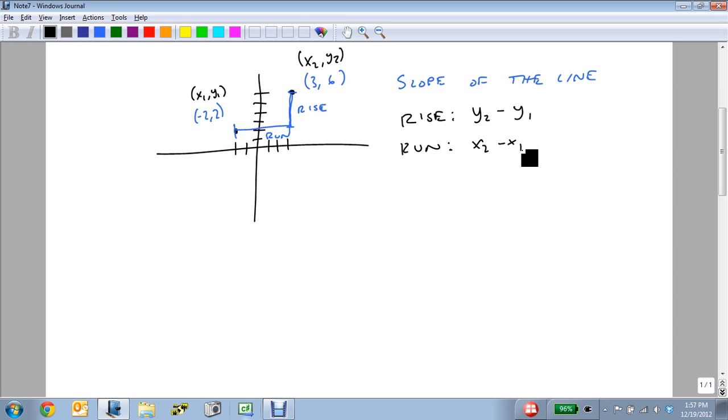And the key here is it doesn't matter which one you label x2 and which one you label y2 and which one's x1 and which one's y1. What matters is that for a given point, if this is my y2, then this is my x2. And if this is y1, then this is x1. So that a given point has the same subscript.